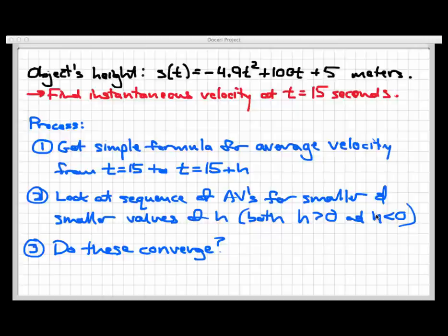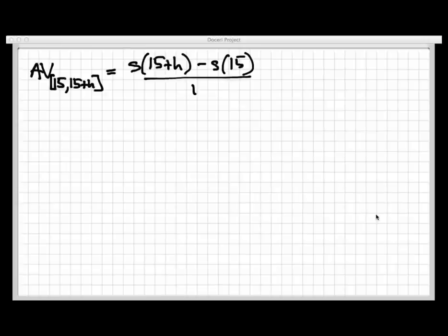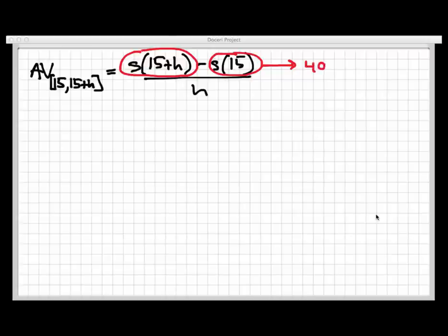First things first, let's get a simple formula for the average velocity from time equals 15 to time equals 15 plus h. We're going to use the alternative formula: s of 15 plus h minus s of 15, all divided by h. This involves finding two pieces. I'm going to calculate s of 15 first, because that's fairly easy — it's just plugging 15 into the formula for s. You come up with 402.5 as a result. s of 15 plus h is considerably longer, so I'm going to use most of this slide to calculate it.